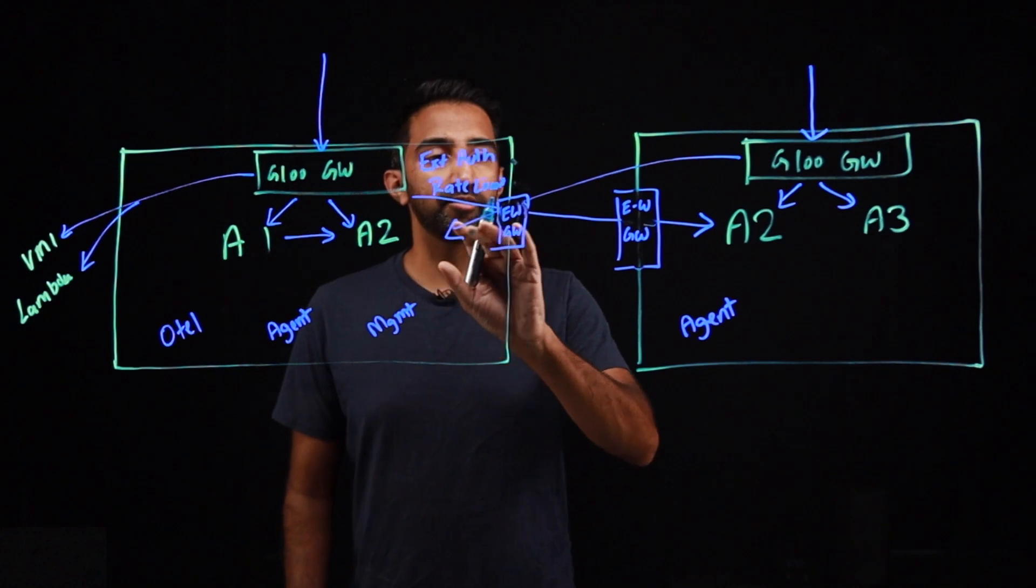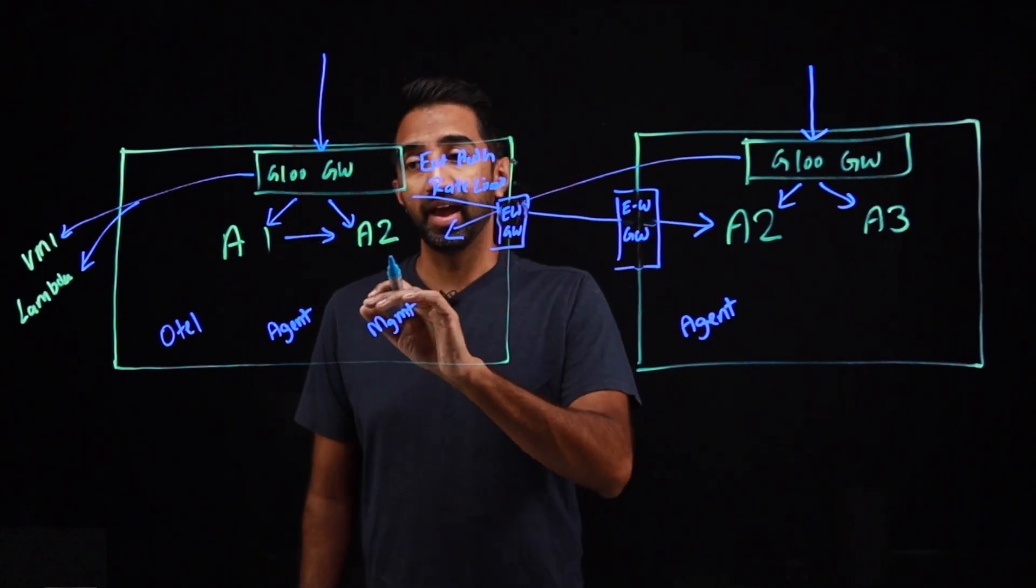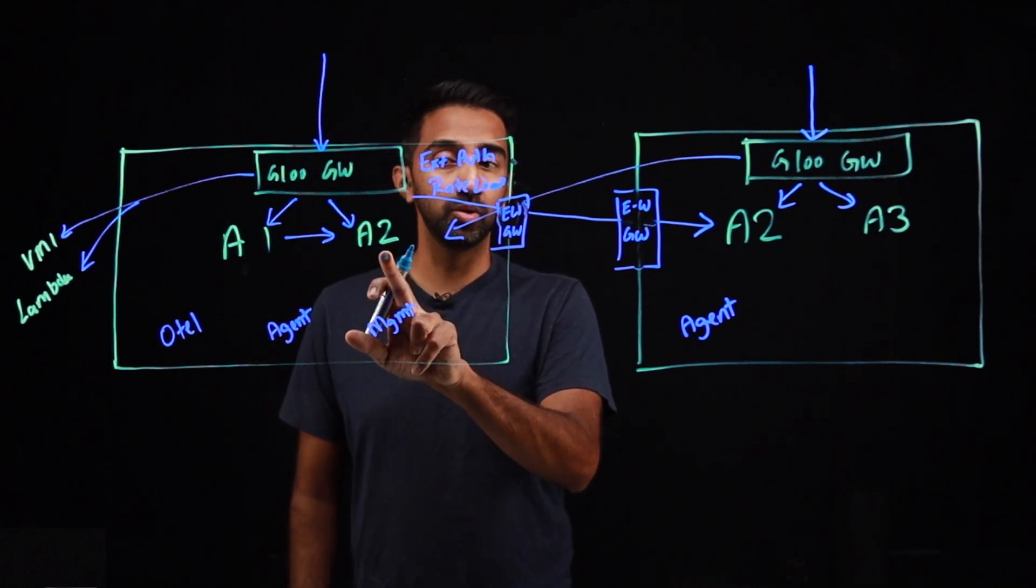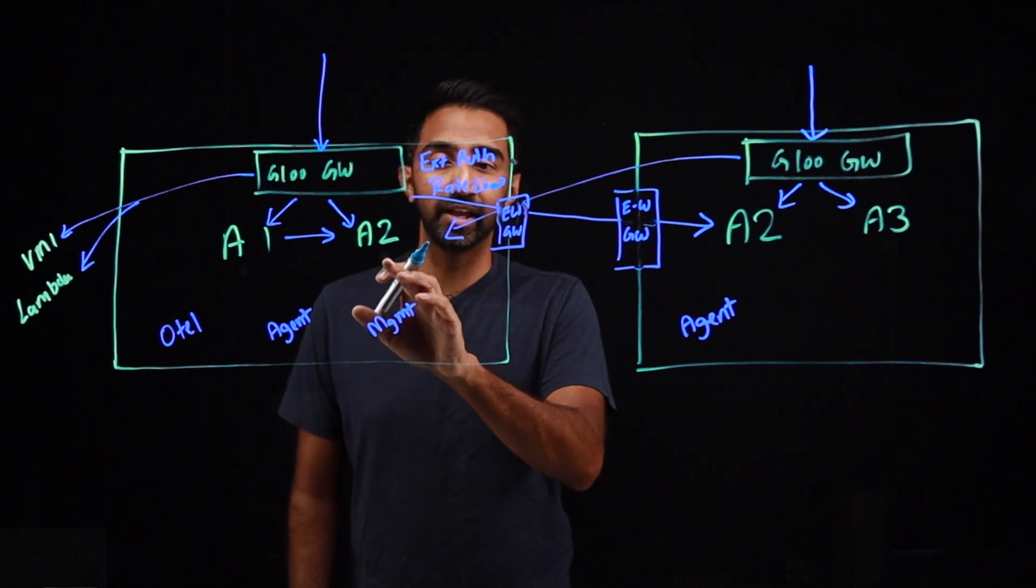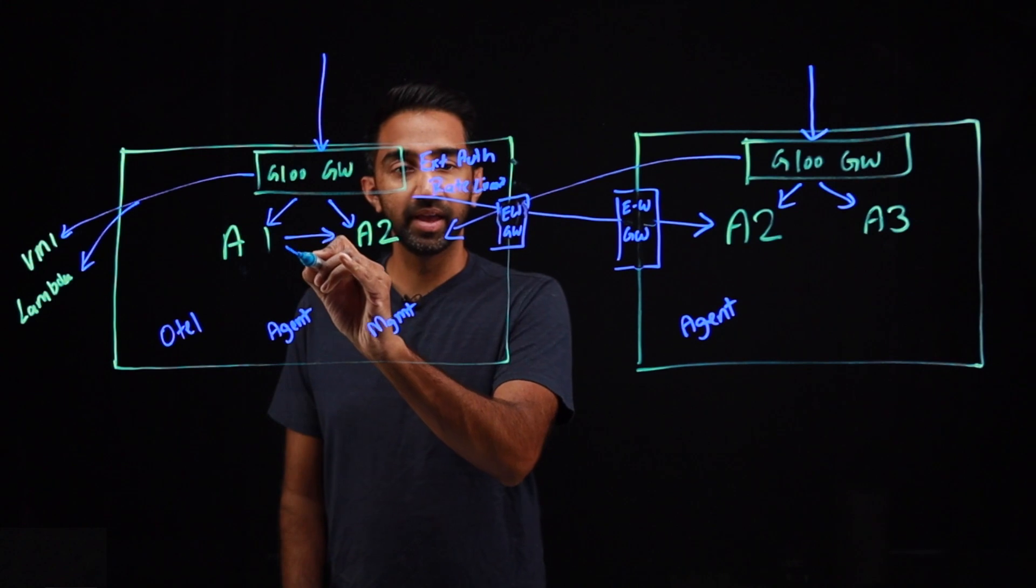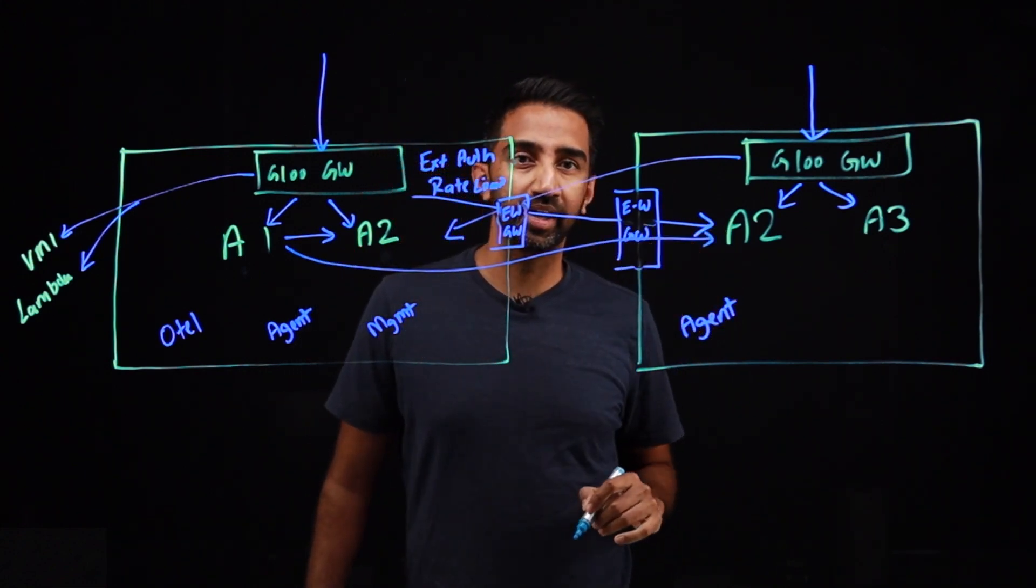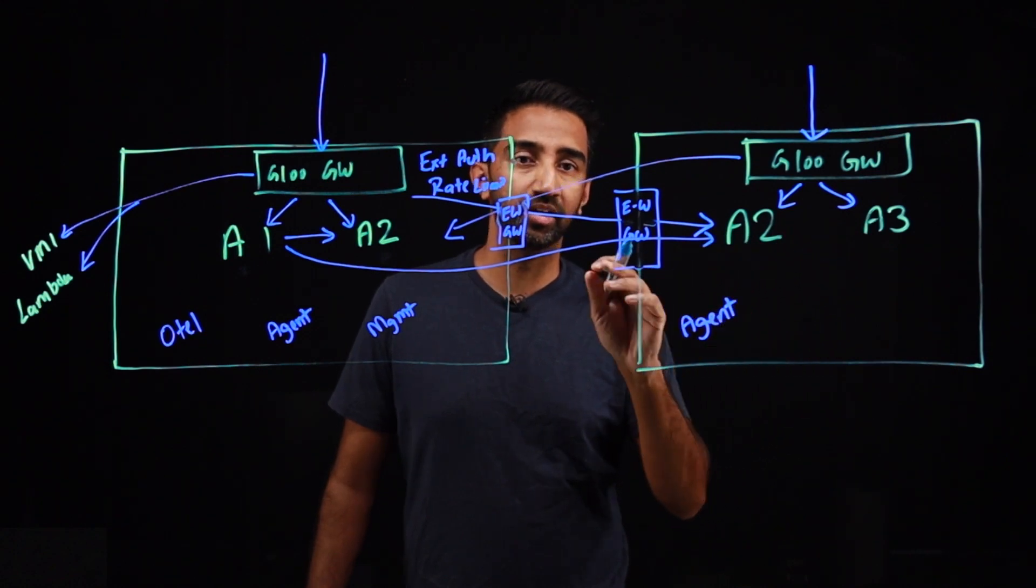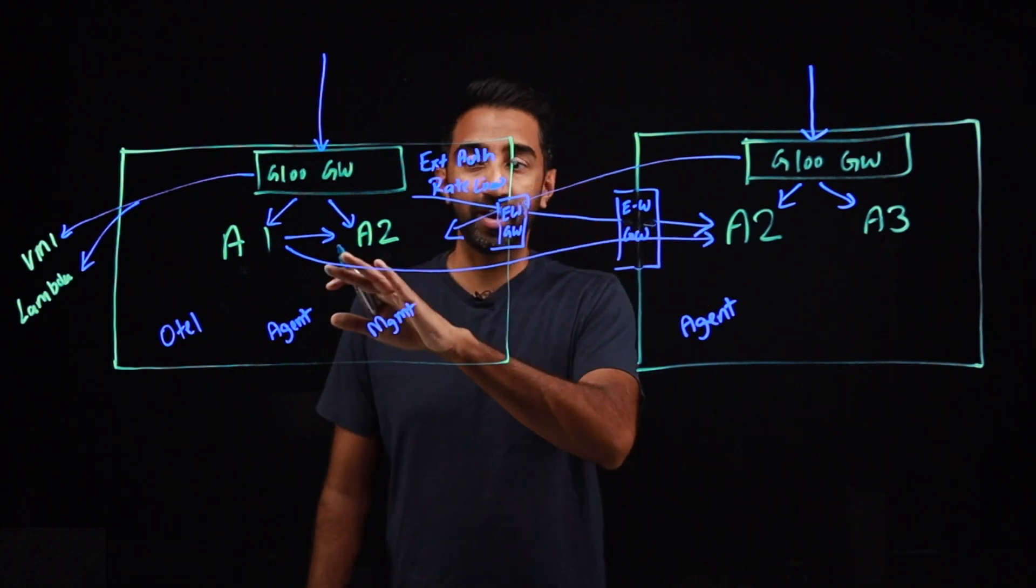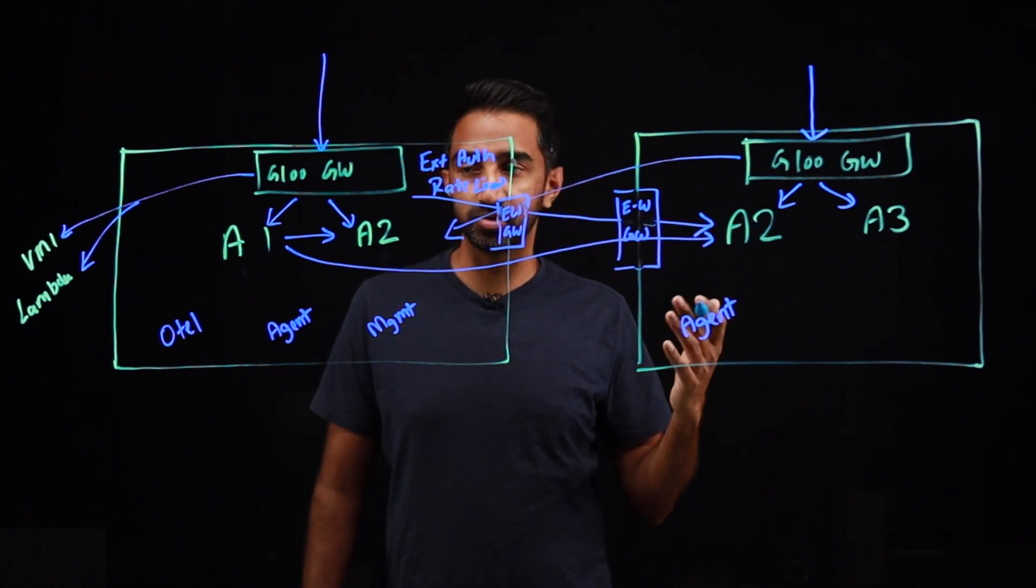And also, now you have multi-cluster capabilities given to every one of your workloads. So meaning, if A1 wants to talk to A2, but A2 is, let's say, A2 crashed or is no longer available in that server, it's not healthy, A1 can automatically talk to A2 sitting in a completely separate cluster, again, going through the east-west gateway. And this failover from one cluster to another is automatically handled using the Glue platform.